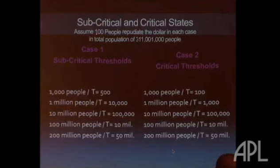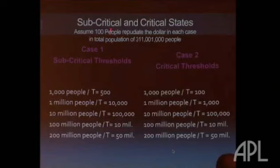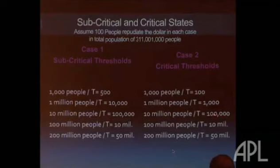Now let's change it — I'm only going to change two variables. I'm going to make the 500 become 100, and I'm going to make the 10,000 become 1,000. But the bottom three are the same; everything else in the system is the same. Now 100 people reject the dollar. At 100, you've triggered the threshold for 1,000. So now 1,000 people reject the dollar. At 1,000, you've triggered the threshold for a million. Now a million people reject the dollar. The next threshold was 100,000 — we had a million, so we're over that — so now 10 million people reject the dollar. At 10 million, you've hit the next threshold: 100 million. The next threshold was 50 — we crossed that — so 200 million people. In the aggregate, the entire population of the United States rejects the dollar.